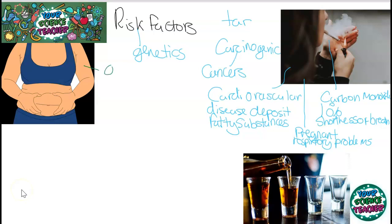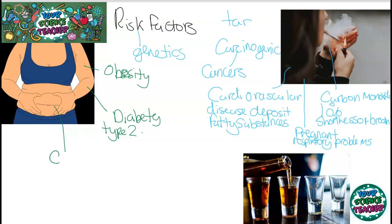Being obese can also affect your chance of contracting a non-communicable disease. An example is diabetes, specifically type 2 diabetes. This is because your body can no longer create enough insulin to lower your blood sugar — you kind of wear it out. The more you eat, the more your body has to produce insulin and it can get worn out. Another non-communicable disease you can get from being obese is cardiovascular disease. Fat can build up in your arteries, meaning you cannot get enough blood to the heart, which can actually cause a heart attack.